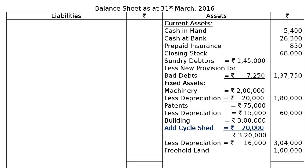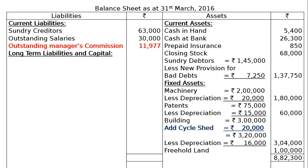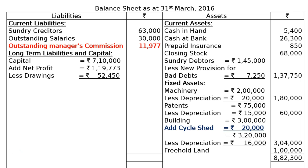The next one is freehold land, that is Rs. 1,00,000. The total of the asset side is Rs. 8,82,300. On the credit side, we will have current liabilities: sundry creditors Rs. 63,000, outstanding salaries Rs. 30,000, outstanding manager's commission Rs. 11,977. Long-term liabilities and capital: capital is Rs. 7,10,000, add net profit Rs. 1,19,773, less drawings Rs. 52,450. In the final column, we will have Rs. 7,77,323. Totalling is Rs. 8,82,300.